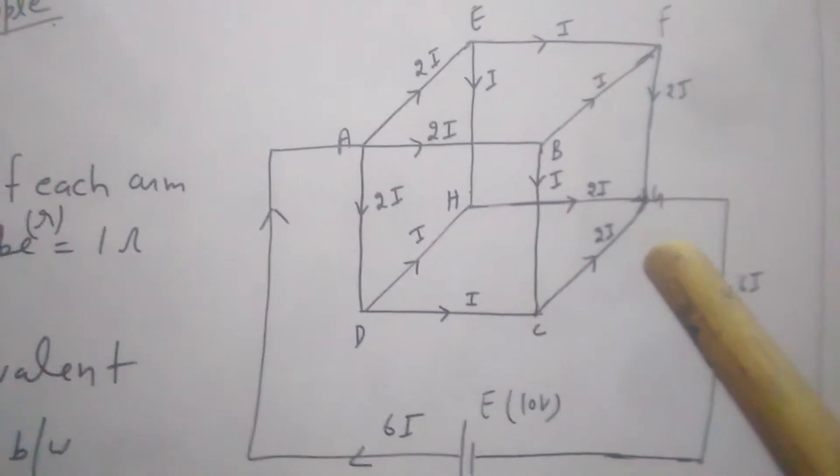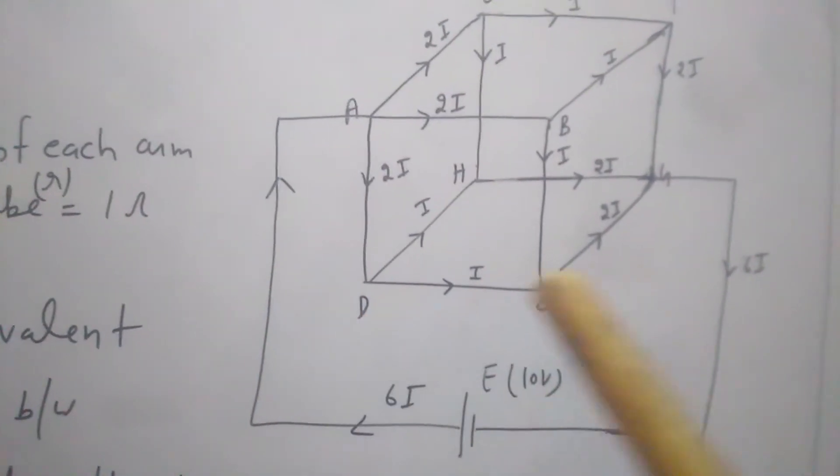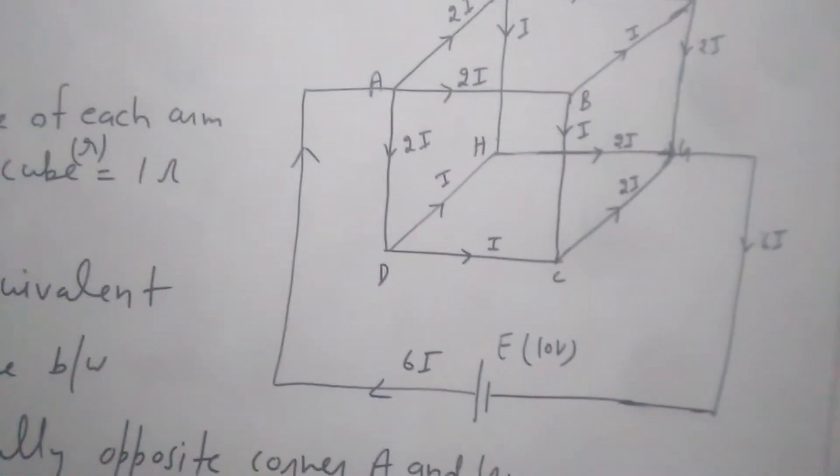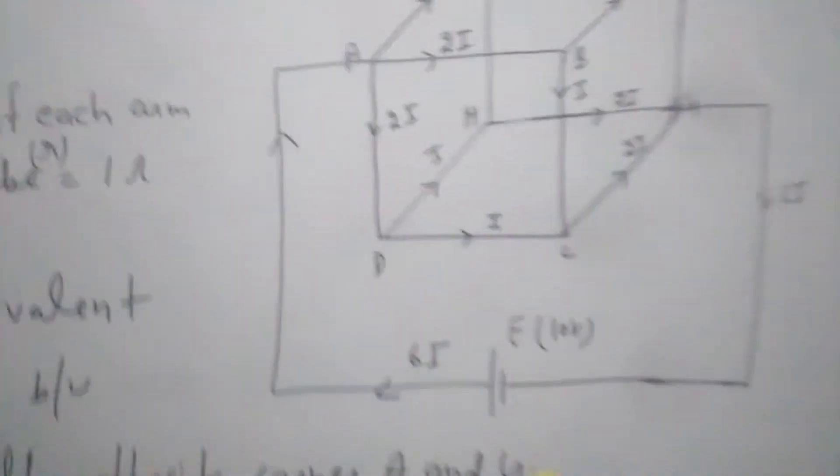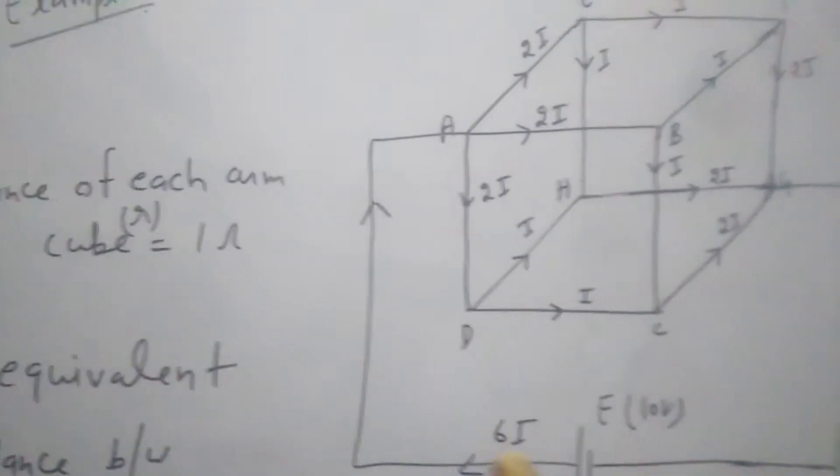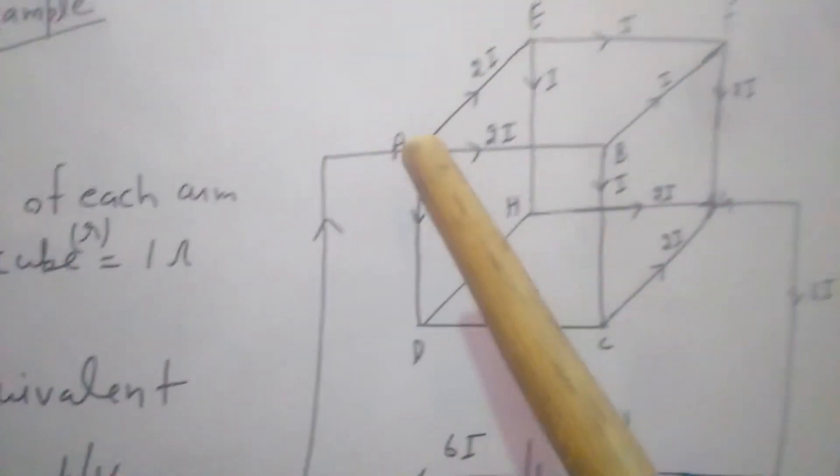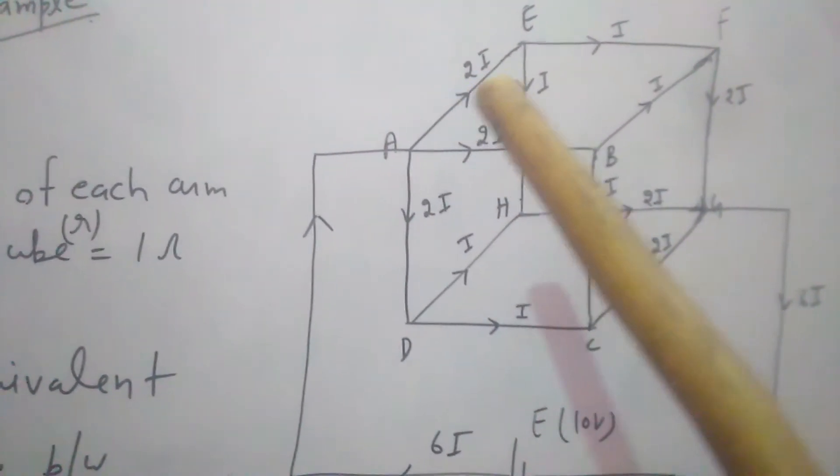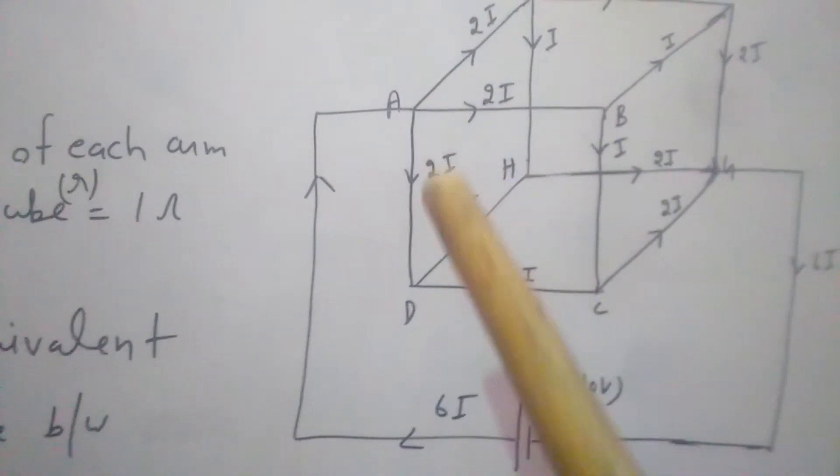So we consider let 6i current flows through this cell, and due to symmetry, 2i current flows along AE, 2i along AB, and 2i along AD.